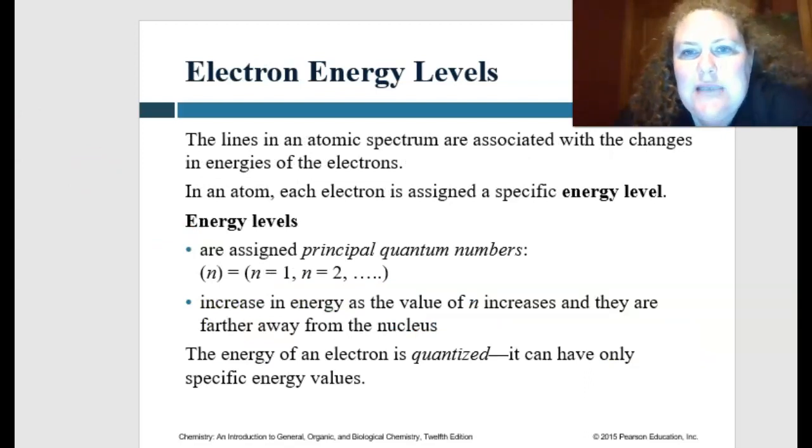This is based on electron energy levels. The lines in the atomic spectrums are associated with the change in energies of the electron. In an atom, each electron is assigned a specific energy level, and these energy levels are assigned in principal quantum numbers. So n is like the sample number, for example, n equals 1, n equals 2, all the way up.